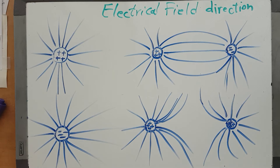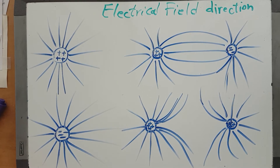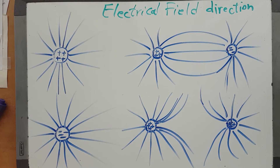How can we determine the direction of the electrical field? We know the definition of electrical field: at any point, it is the force applied at that point to a unit of positive charge — so one coulomb of positive charge.